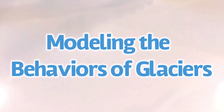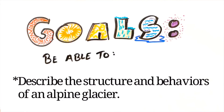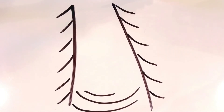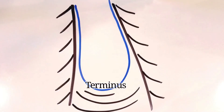Glaciology can get very complex, so let's recall the goal for this video: after watching this video, you should be able to describe the structure and behaviors of an alpine glacier. While you watched the glaciers move down their glacial valleys, you should have noticed a few key features and behaviors. One is that glaciers have a front end — this is called the glacier's terminus. It's the active, foremost end of the glacier.